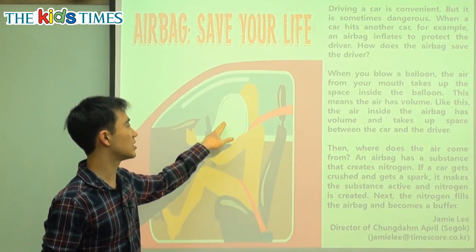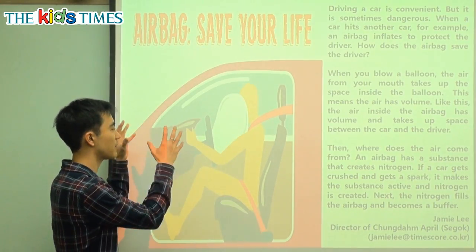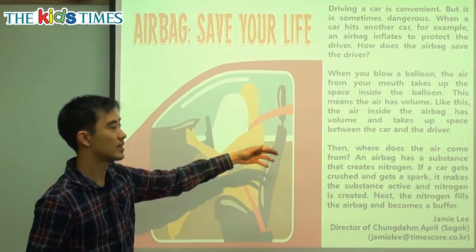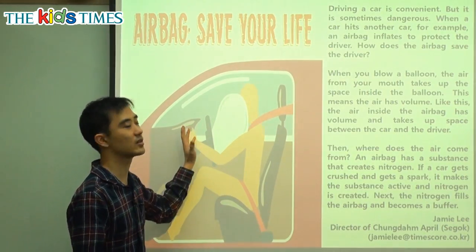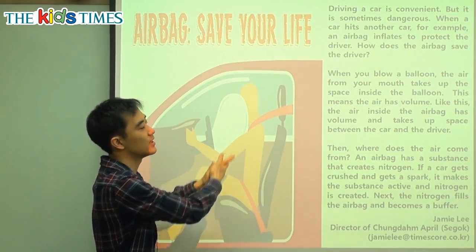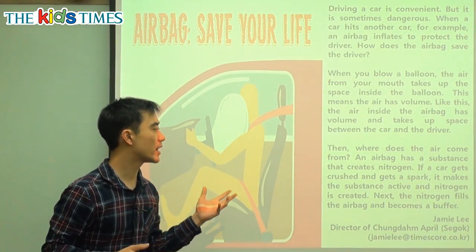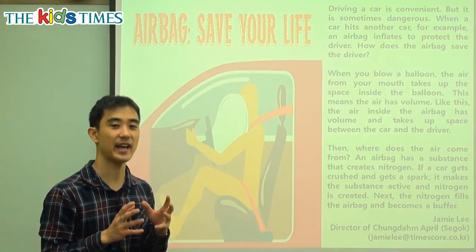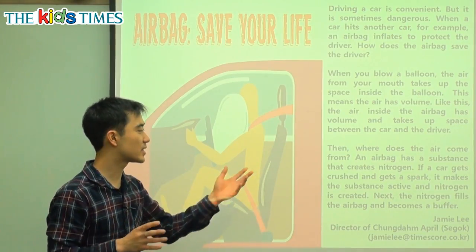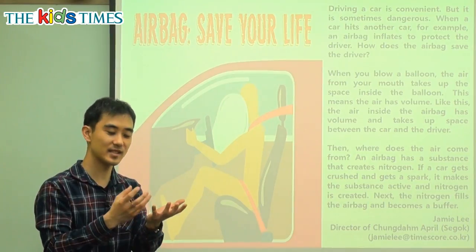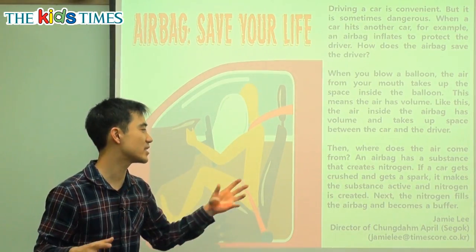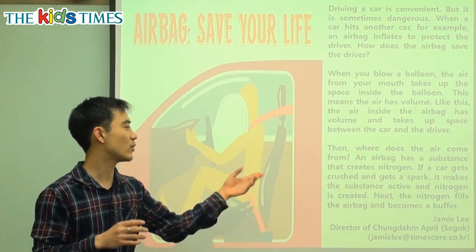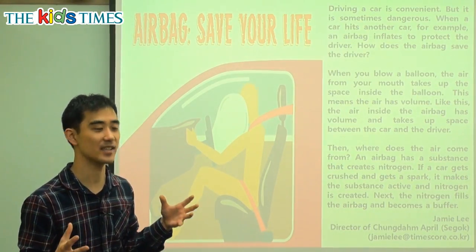So the same thing — think of the airbag like a balloon. The air from outside takes up space going inside this airbag, and it comes between you and the steering wheel to protect you. Now, where does the air come from? An airbag has a substance that creates nitrogen. This powder makes nitrogen, which is a very common gas — we have oxygen, carbon dioxide, and nitrogen. It's just a gas that we breathe.